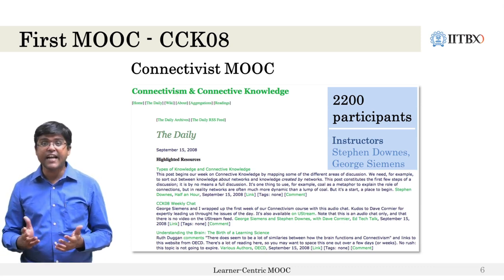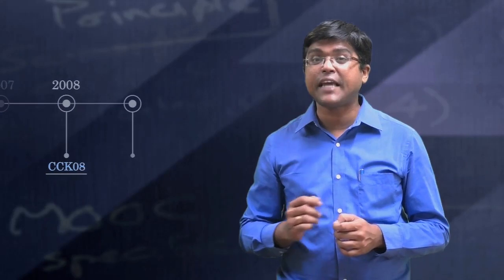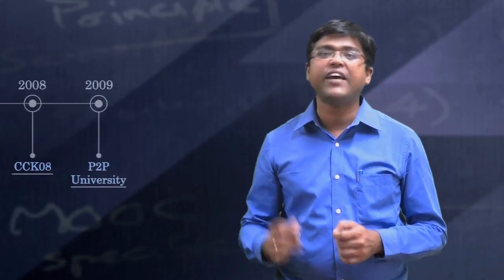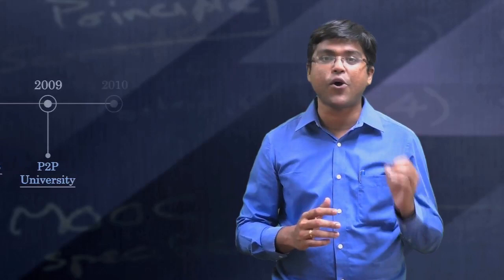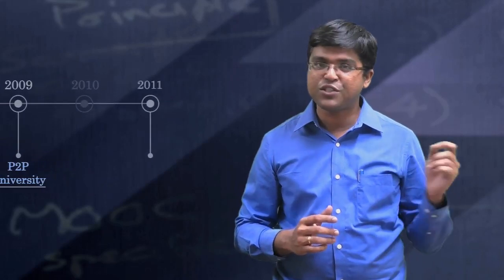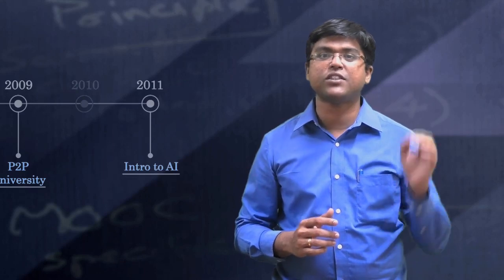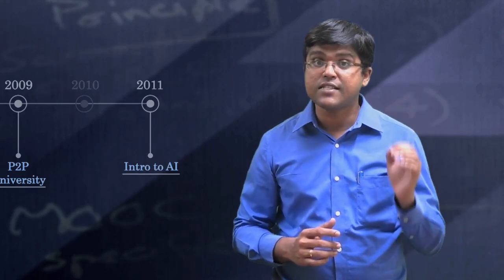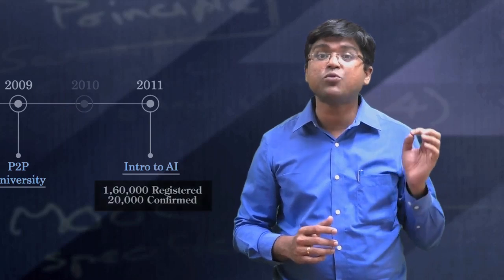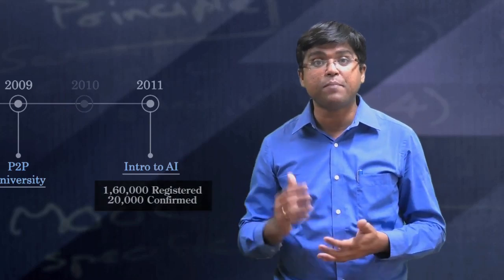The course attracted 2,200 participants worldwide. The next big revolution in online offerings came in the year 2011 when Stanford University offered three courses online. One of them was the course Introduction to Artificial Intelligence, offered by Professor Sebastian Thrun along with Peter Norvig. This attracted 160,000 learners, with around 20,000 of them completing the course.